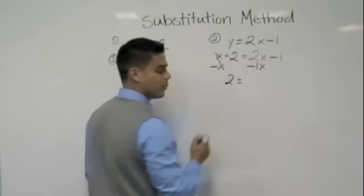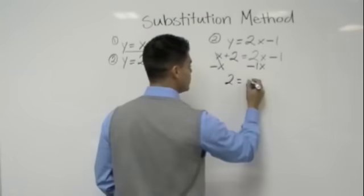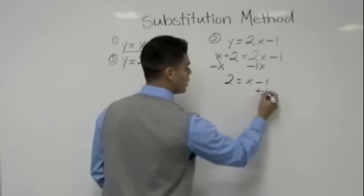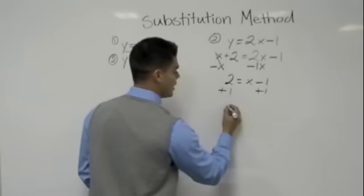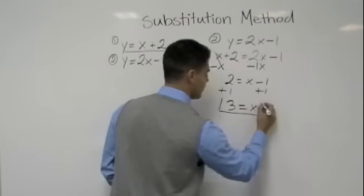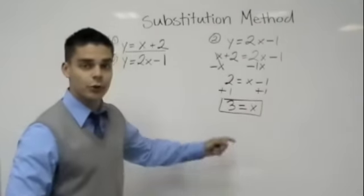So I subtract x from both sides and I get 2x minus, remember we can put a 1 there, minus 1x gives me x - 1. I add 1 so I can isolate x and I get x = 3. How was I able to do that?